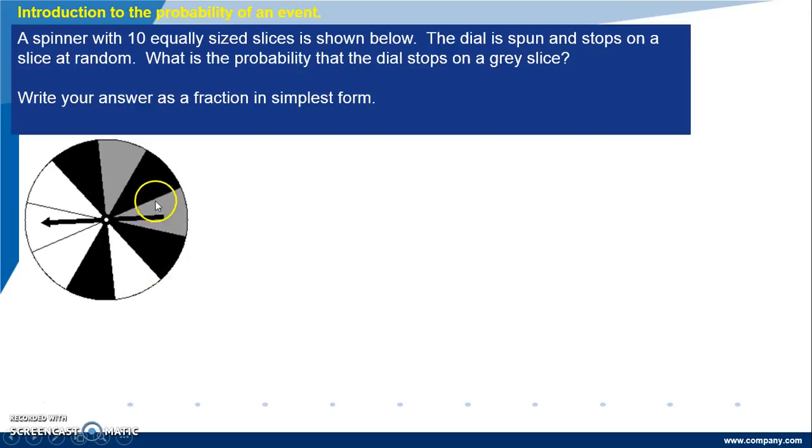Well there are 10 slices in total, so this number becomes our denominator. There are two grey slices, so this number becomes our numerator. The probability of grey is 2 over 10, but we have to write our answer in simplest form and that becomes 1 fifth.